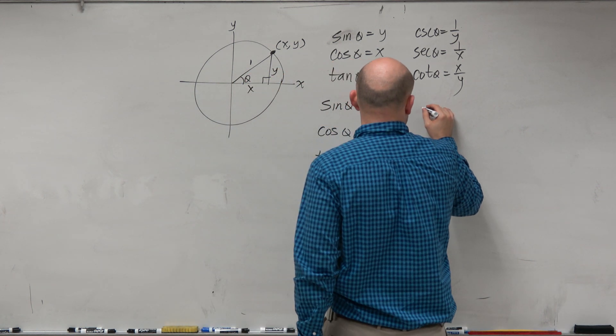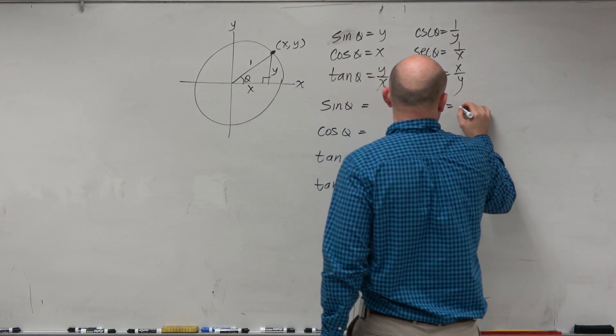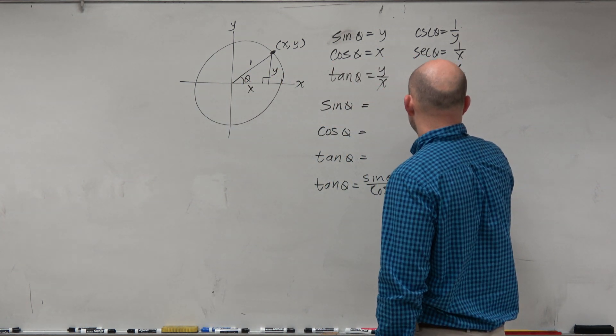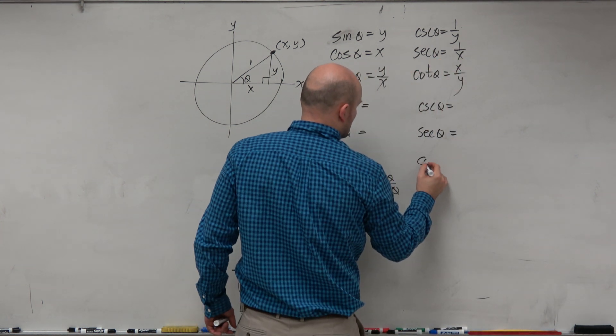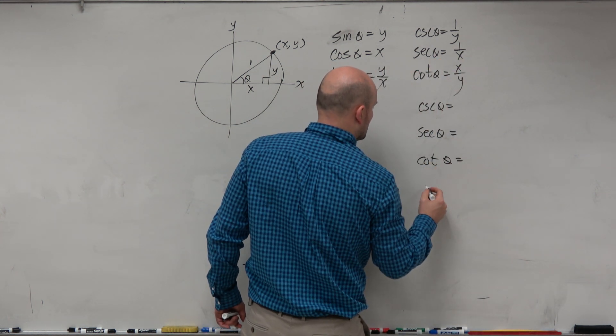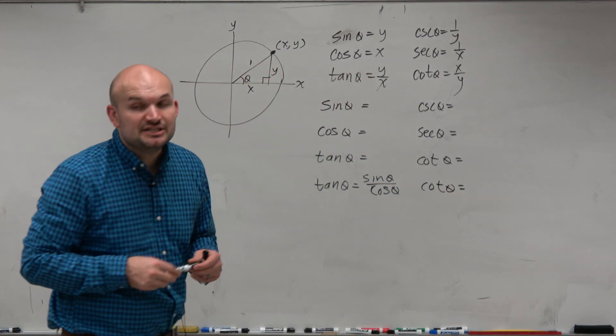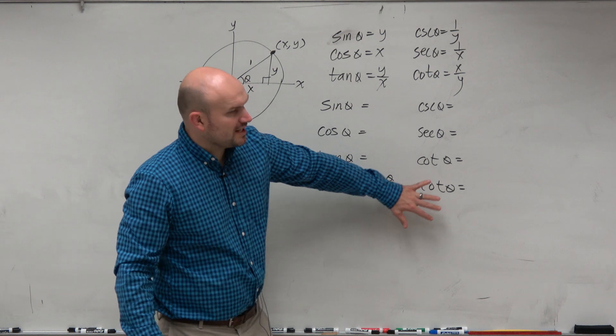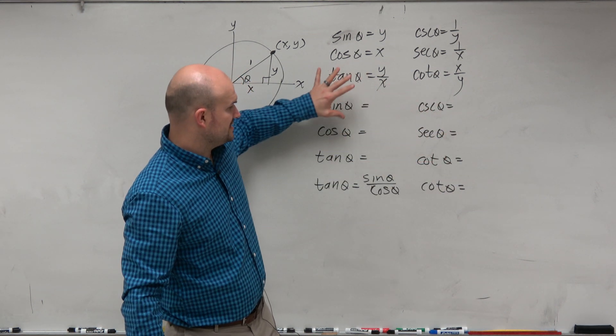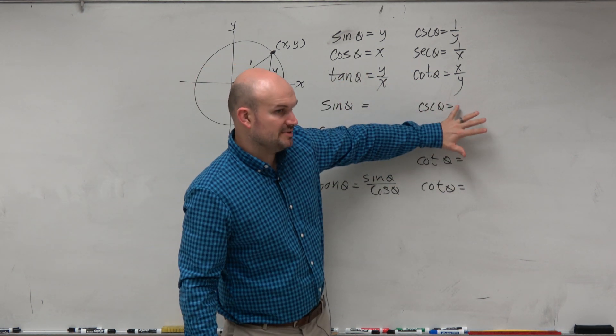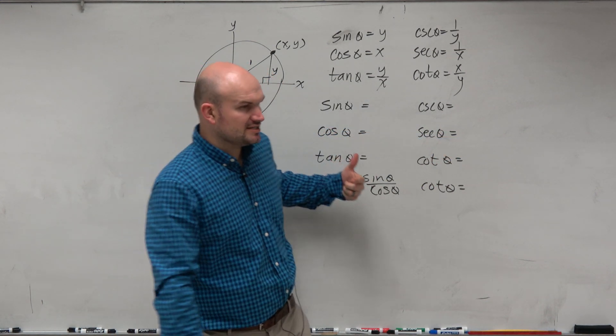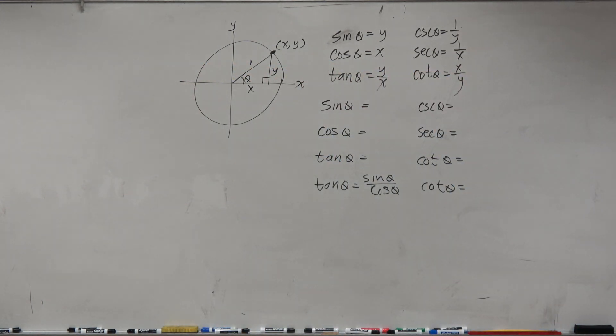So now what I'd like you to do is see if you guys can come up with the rest of the relationships. OK, now my recommendation for you is to go ahead and work on this side first, and then try to see if you can figure out these three. But this side is going to be your easiest one. Just try to see if you guys can figure them out. Just based on your understanding of x and y's, how are things going to go ahead and relate to one another?